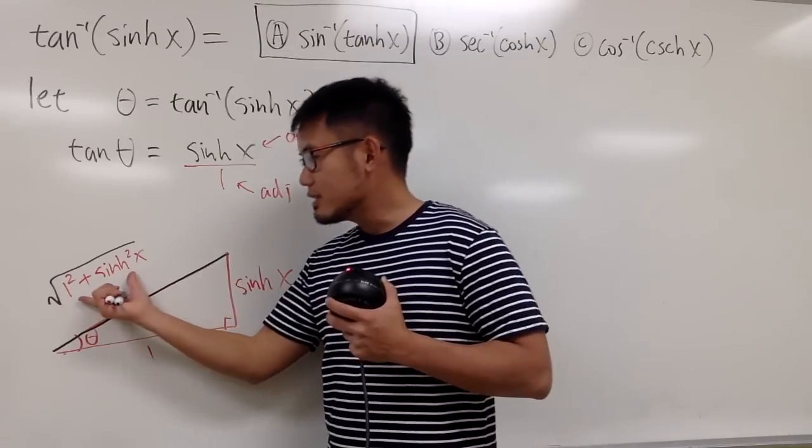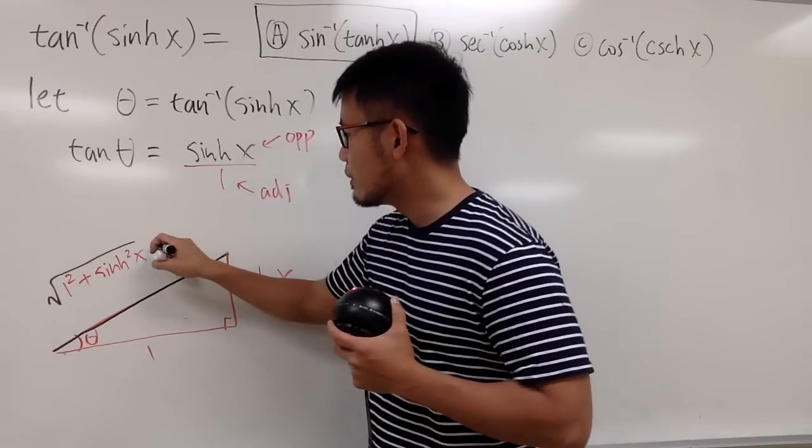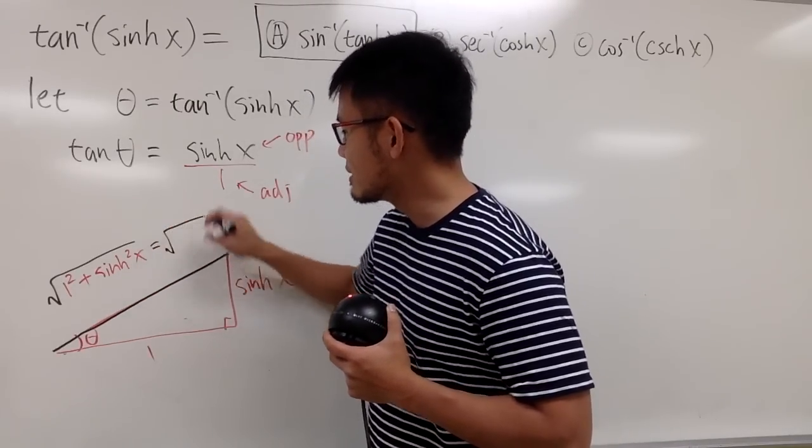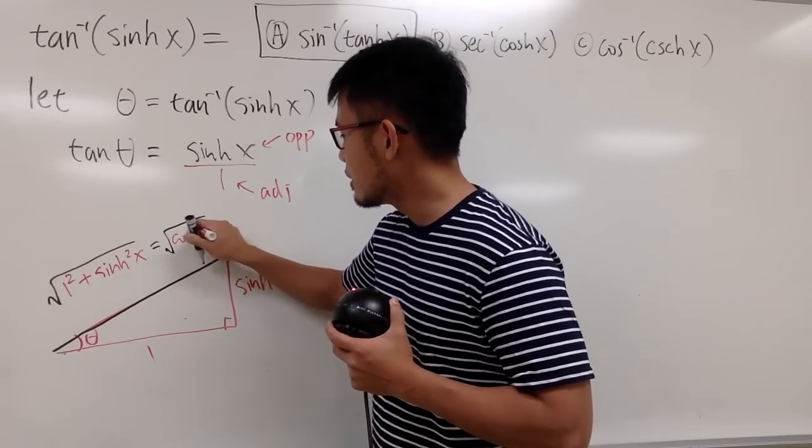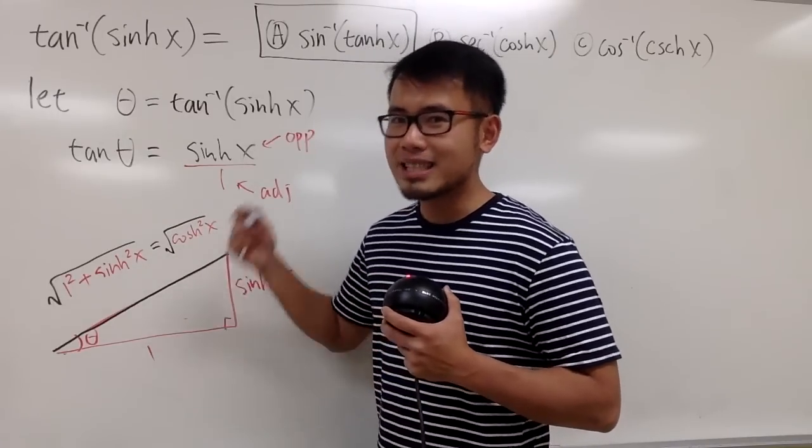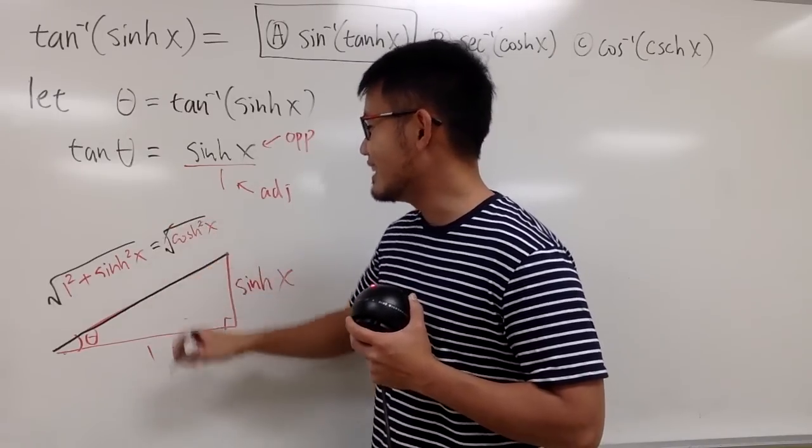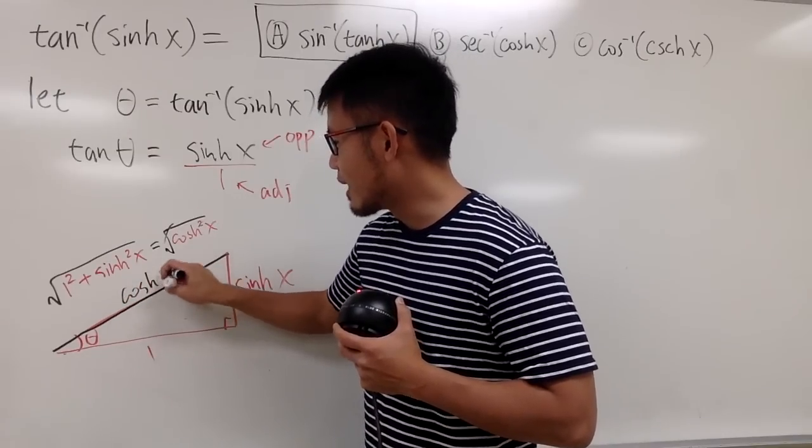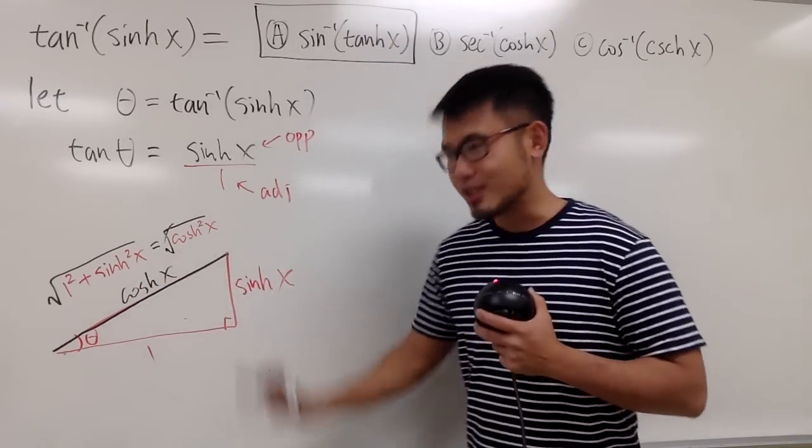But the best part is that this right here is equal to cosh square x. So we can put this down as square root of cosh square x. And then the best, best part is that this and that will cancel. So in the end, we can just say this is nothing but just cosh of x. So it's really cool, huh?